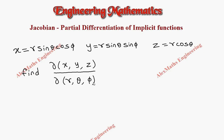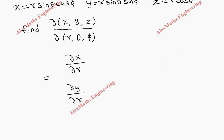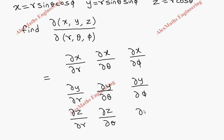We have to find ∂(x, y, z) / ∂(r, θ, φ) using the Jacobian formula. The determinant consists of: ∂x/∂r, ∂y/∂r, ∂z/∂r in the first column; ∂x/∂θ, ∂y/∂θ, ∂z/∂θ in the second; and ∂x/∂φ, ∂y/∂φ, ∂z/∂φ in the third. We need to fill in these elements.